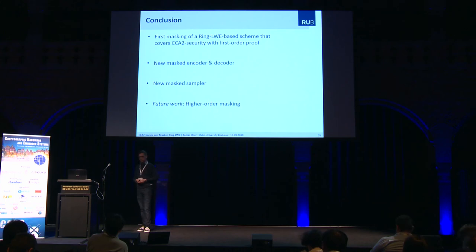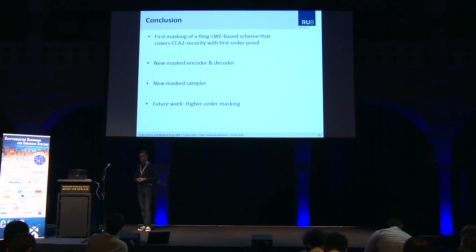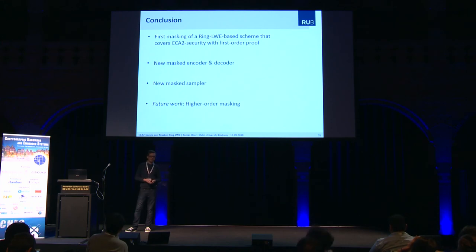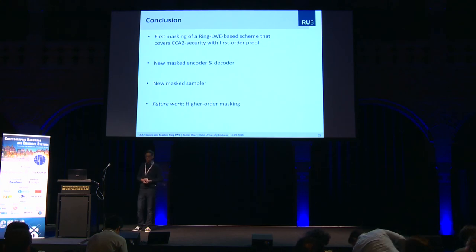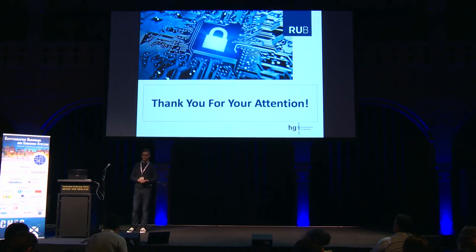To conclude: we present the first masking of a Ring LWE-based scheme that also covers CCA2 security. We provide theoretical proofs for our proposals and practical experiments for higher confidence. Specifically, we contribute a new masked decoder and encoder, and a new masked sampler. For future work, it would be interesting to look at higher-order masking.